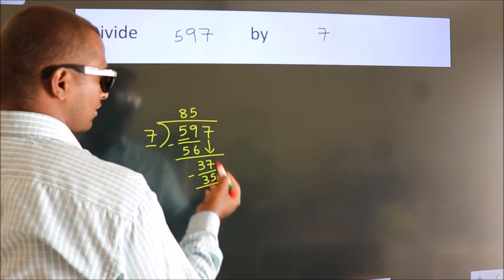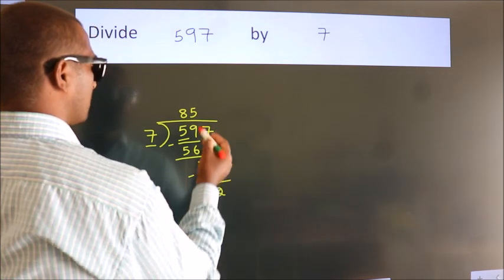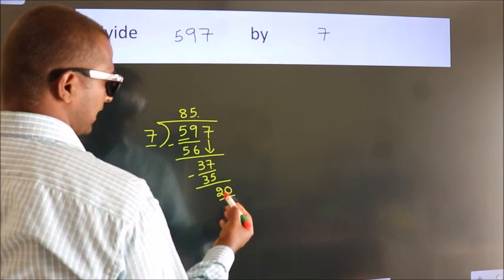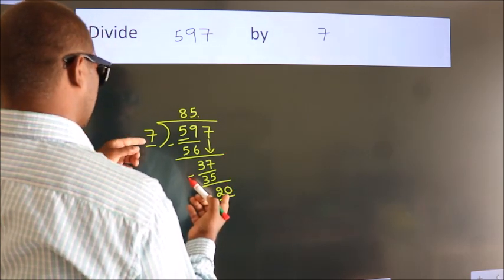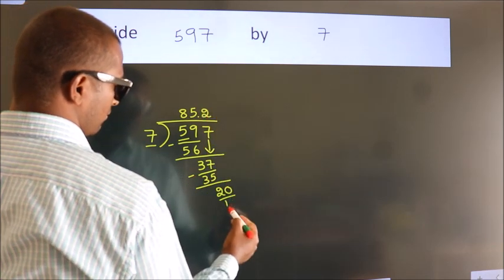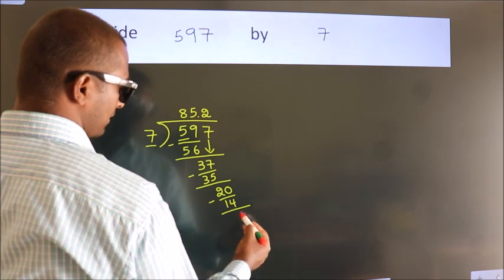After this, no more numbers to bring it down. So what we do is we put a dot and take 0. So 20. A number close to 20 in the 7 table is 7×2=14. Now we subtract. We get 6.